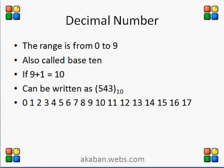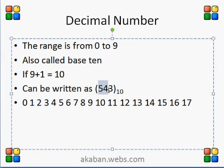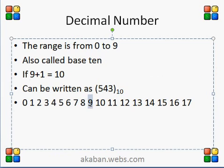First of all we talk about decimal numbering system. In decimal numbering system there is a range from 0 to 9, which means we have 10 members. These are the main 10 members, so that's why we write base 10. This is the numbering system we use normally in our daily routine. It has base 10, and whenever the last member is 9, whenever we add 1 in 9 then it becomes 10.